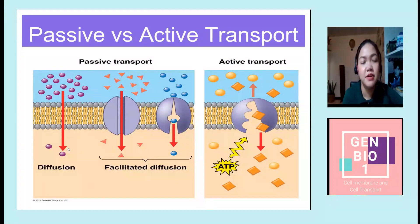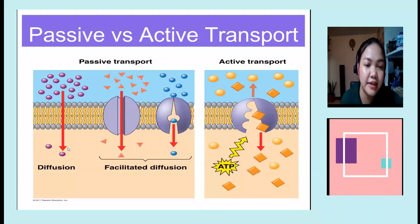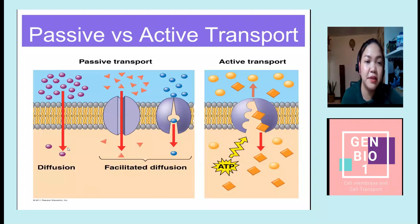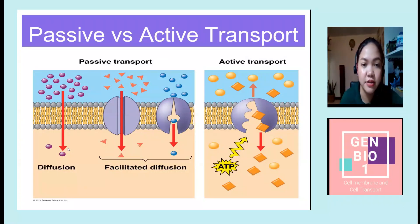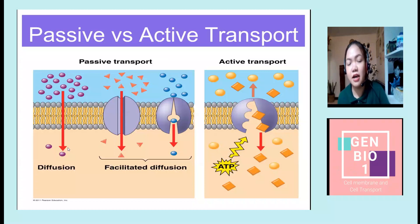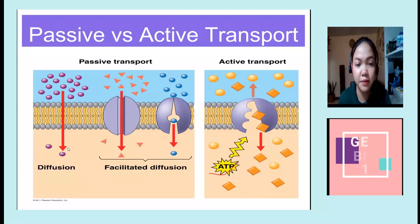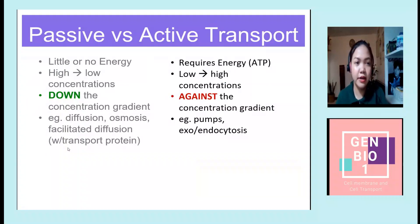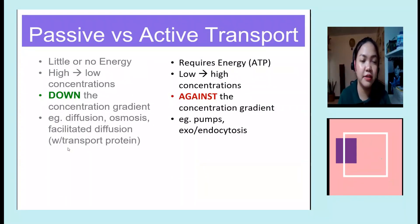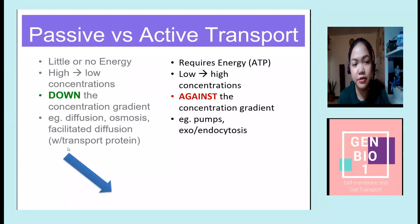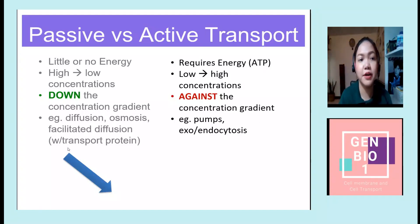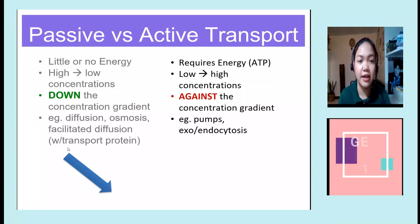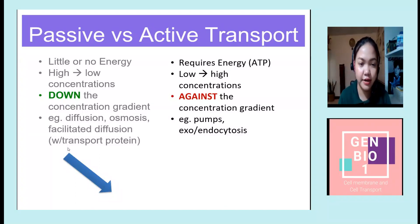Comparing passive and active transport: passive transport is the movement of molecules that doesn't need energy — little or no energy required — from high to low concentration, down the concentration gradient. Examples include diffusion, osmosis, and facilitated diffusion with transport proteins. Active transport requires energy such as ATP, moving substances from low to high concentration against the gradient. Examples include pumps, and exo- and endocytosis.